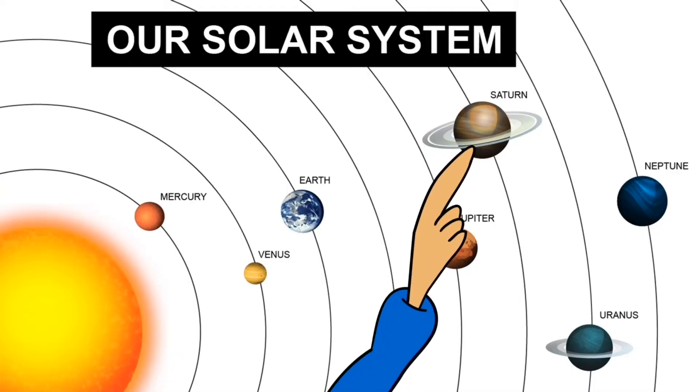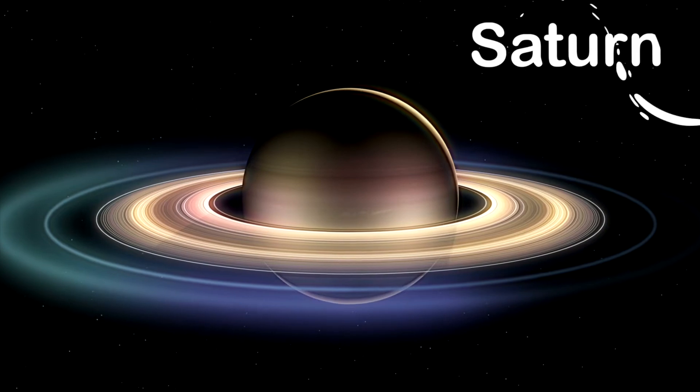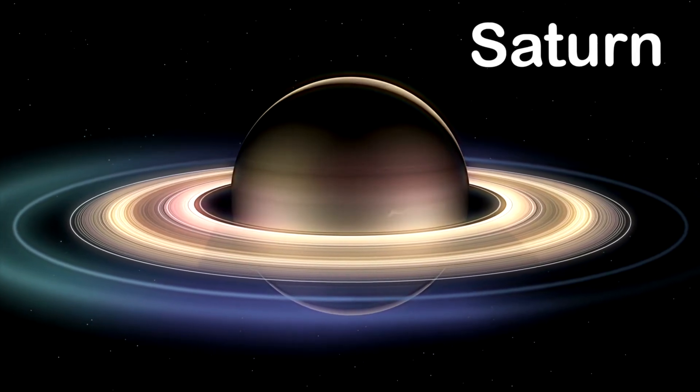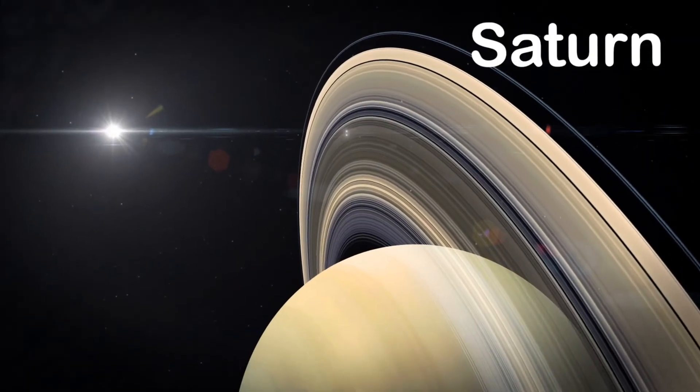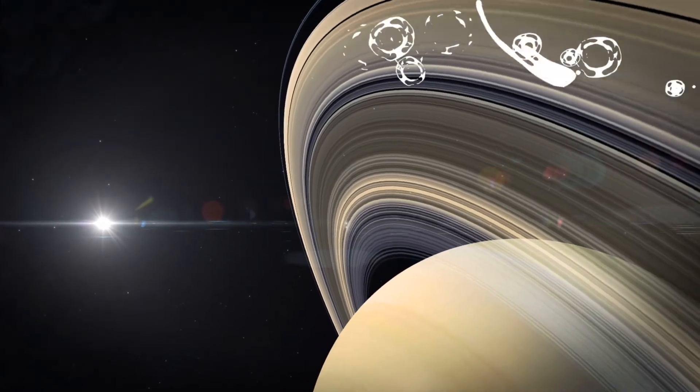The next planet in our solar system is Saturn. Saturn is next to the rings of ice and dust. The rings contain rocks. They're as big as a bus. The surface of Saturn is mostly hydrogen gas. It's very, very cold and the winds blow fast.